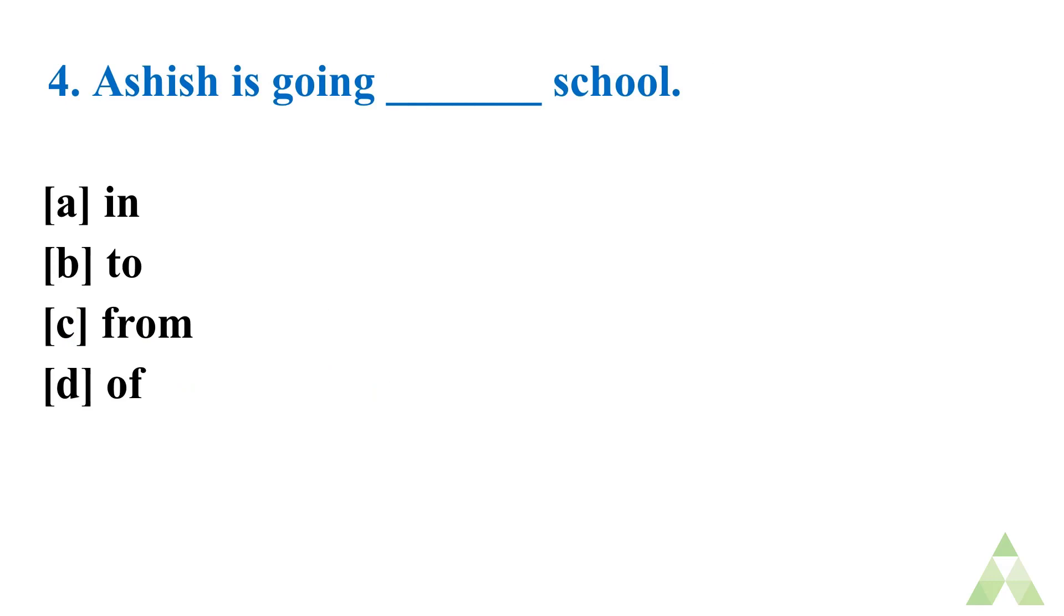Now let's move on to question number 4. Ashish is going dash school. Option A. In. Option B. To. Option C. From. Option D. Off. So it's very easy. So I hope when you see this question simultaneously so many students answer so quickly I think. So let's see. Quickly write down the answer. I will not explain about the options and let's see. It's very easy. We are going dash school. Similarly Ashish is going dash school. Let's don't waste our time.